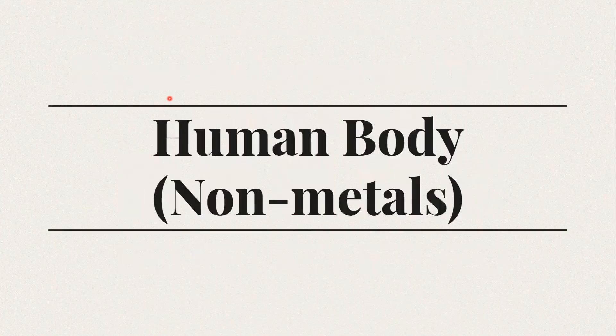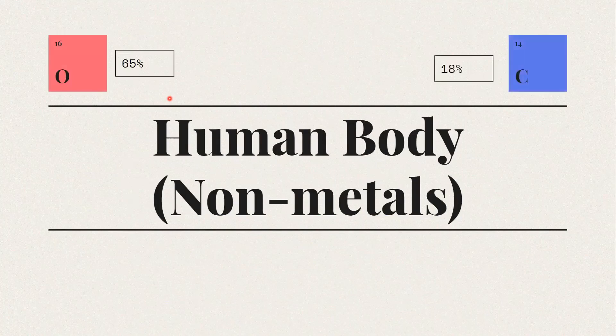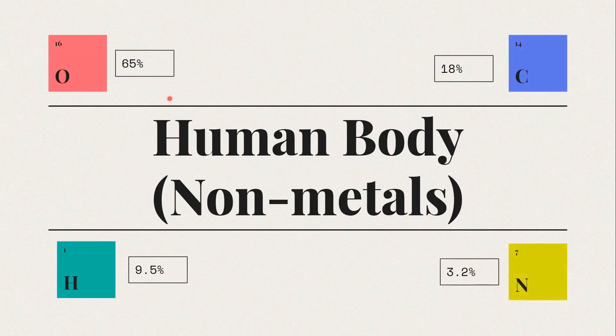Next, the human body. I've listed the major bulk constituents, which are non-metals: oxygen comprises 65% of the human body, carbon 18%, hydrogen 9.5%, and nitrogen approximately 3%. OCHN is the order of most abundant non-metals in the human body.